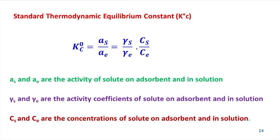In order to obtain the standard thermodynamic equilibrium constant Kc°, activity should be used instead of concentration of the model compound. The thermodynamic equilibrium constant Kc° equals AS divided by AE, which equals (γs divided by γe) multiplied by (CS divided by CE). In this equation, AS is the activity of solute on the adsorbent, AE is the activity of solute in solution, γs is the activity coefficient of solute on the adsorbent, γe is the activity coefficient of solute in solution, CS is the concentration of solute on the adsorbent, and CE is the concentration of solute in solution.